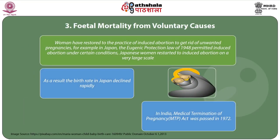Fetal mortality from voluntary causes: although women have resorted to the practice of induced abortion to get rid of unwanted pregnancies. For example, in Japan the Eugenic Protection Law of 1948 permitted induced abortion under certain conditions, and Japanese women resorted to induced abortion on a very large scale. As a result, the birth rate in Japan declined rapidly. In India, the Medical Termination of Pregnancy Act was passed in 1972.